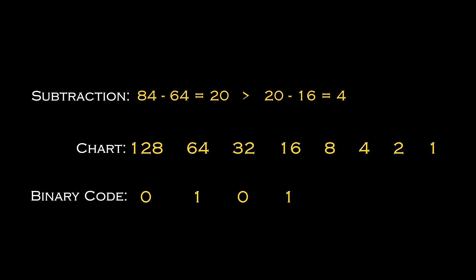Moving on to the next number, which is 8 — that's larger than 4, so no math: put a 0 under the 8. Then we have the number 4, which is equal to our remainder of 4. Equal numbers also get a 1 in the binary slot. That leaves us with 0, so all remaining spots thereafter will be filled with zeros. At this point, you have successfully translated 84 into an 8-digit binary code.